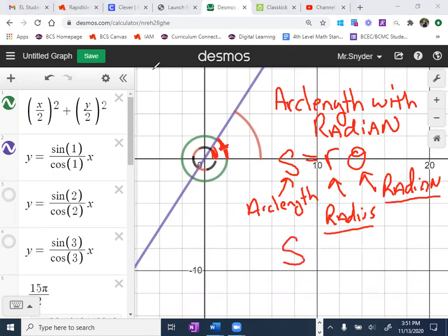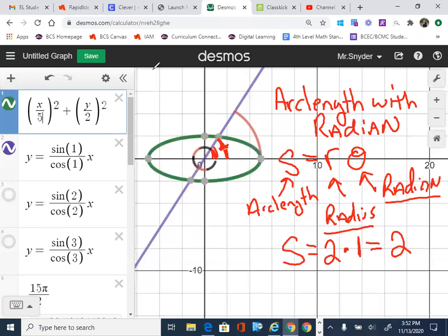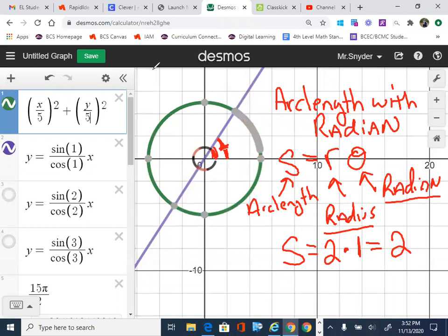So in this case, the arc length would be the radius, which is now two, times the one radian, which means that our arc length is approximately two. And we can continue to do this until we got all the way out to a larger circle. And what we would see there is in this case,